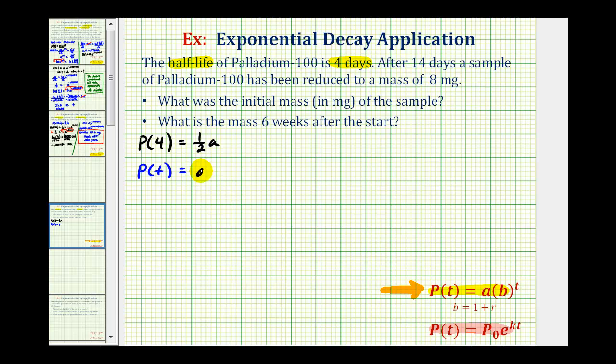And then to determine the exponent, again when t is four, this function value has to be one-half a, which means the exponent on the base of one-half must be one when t is four. So we can't just use an exponent of t, we have to use an exponent of t divided by four.